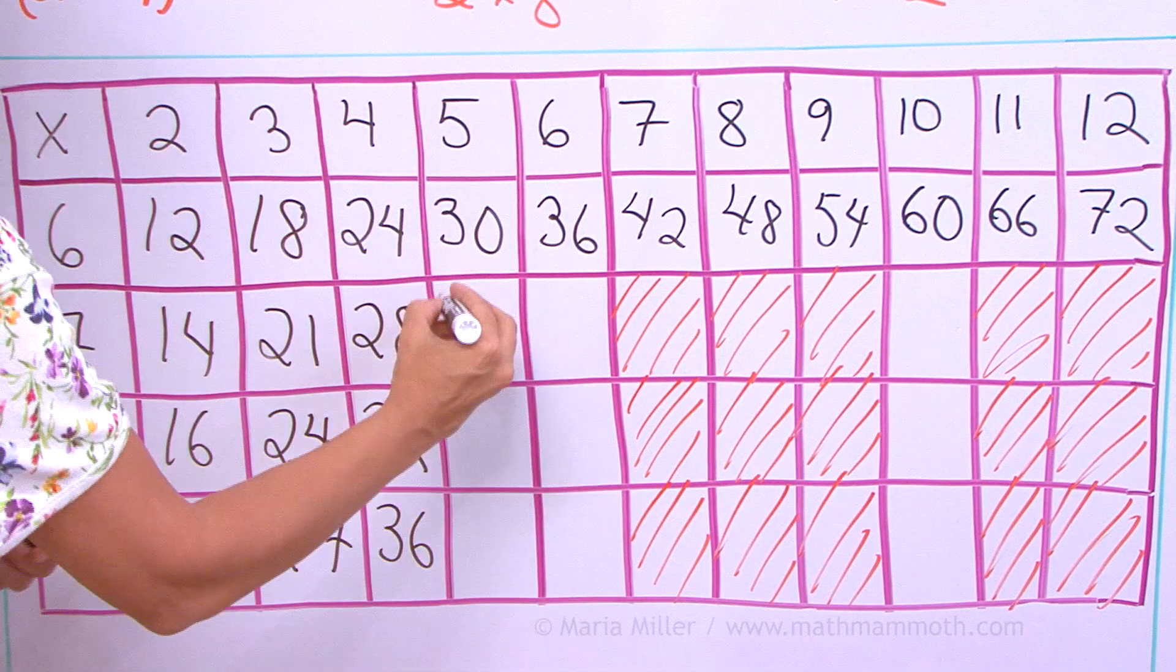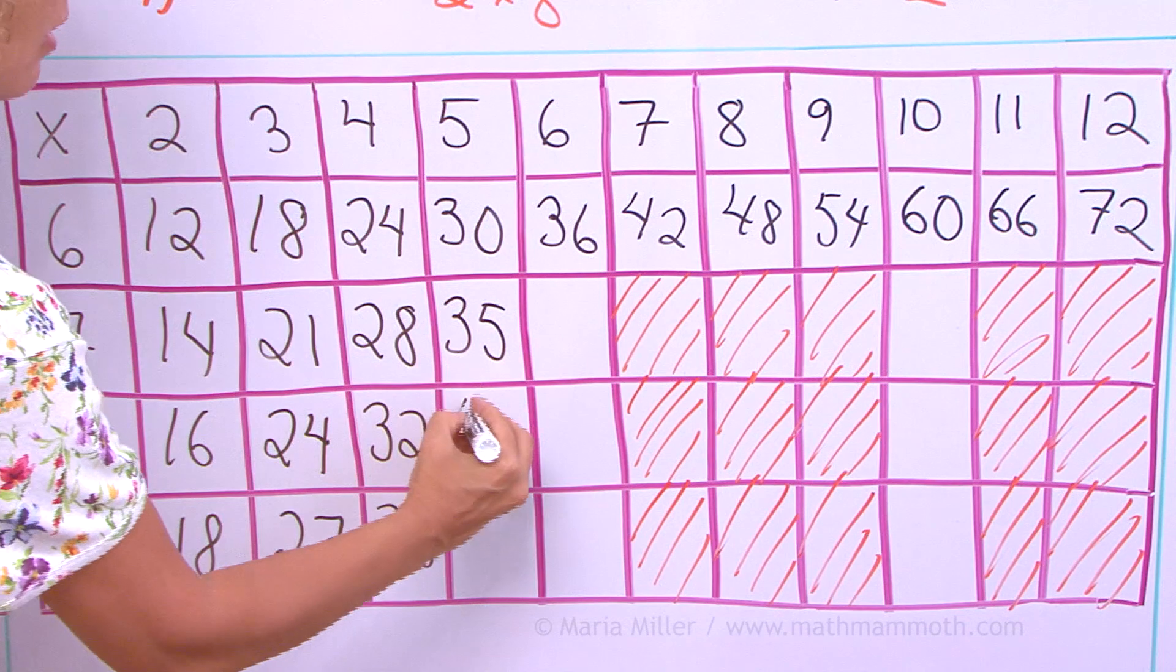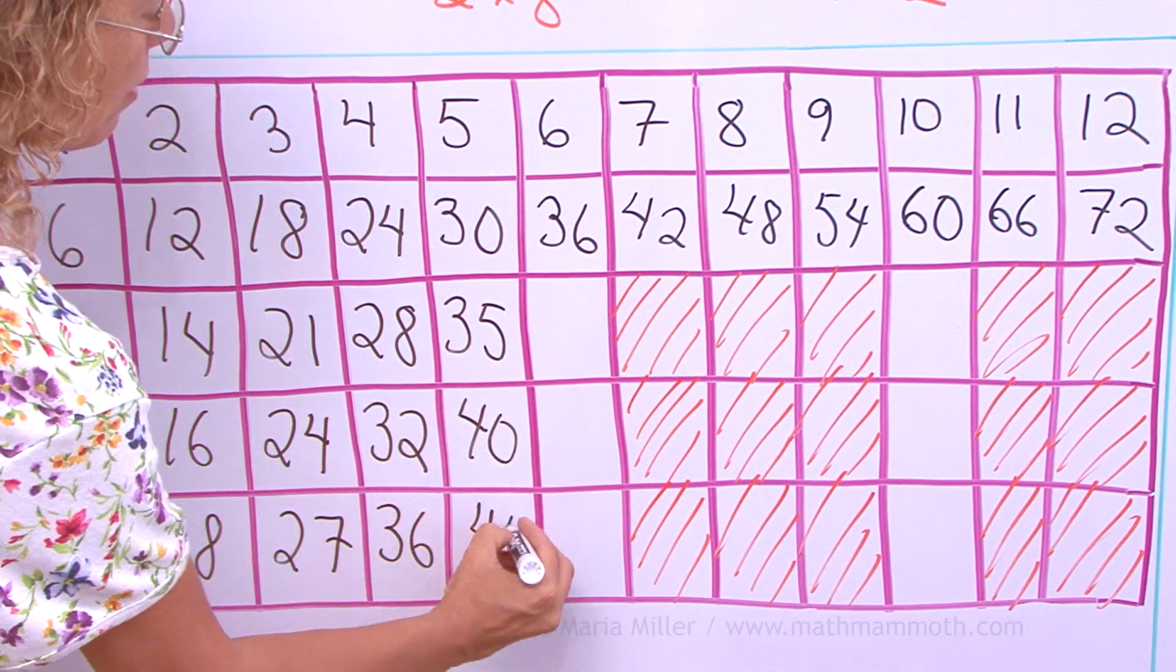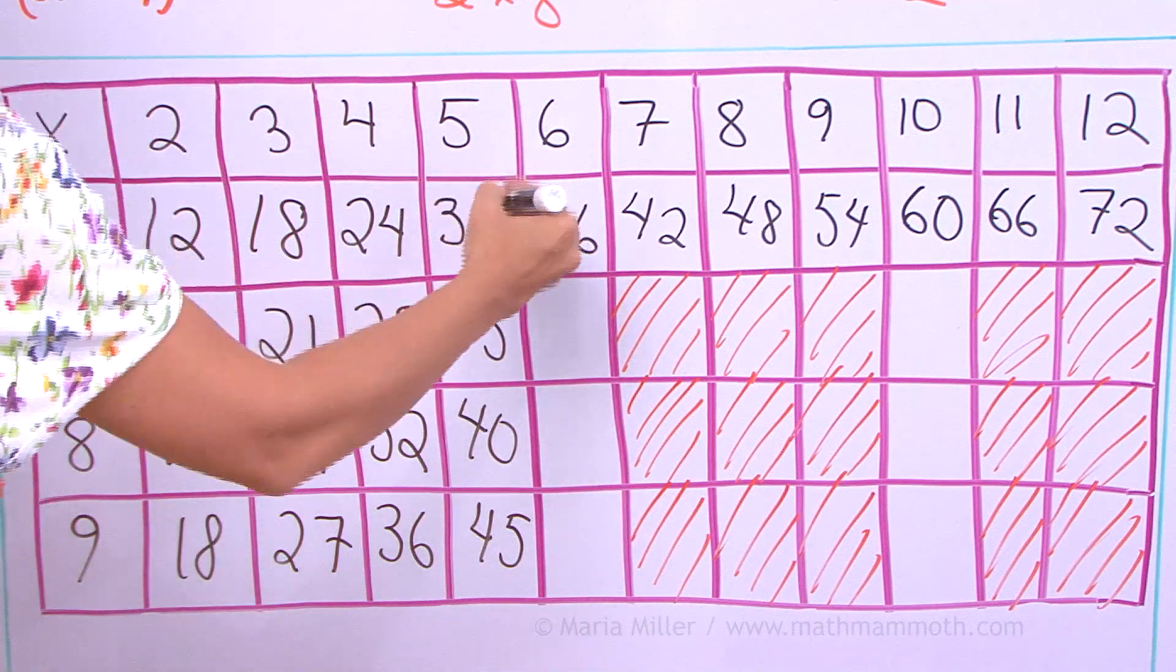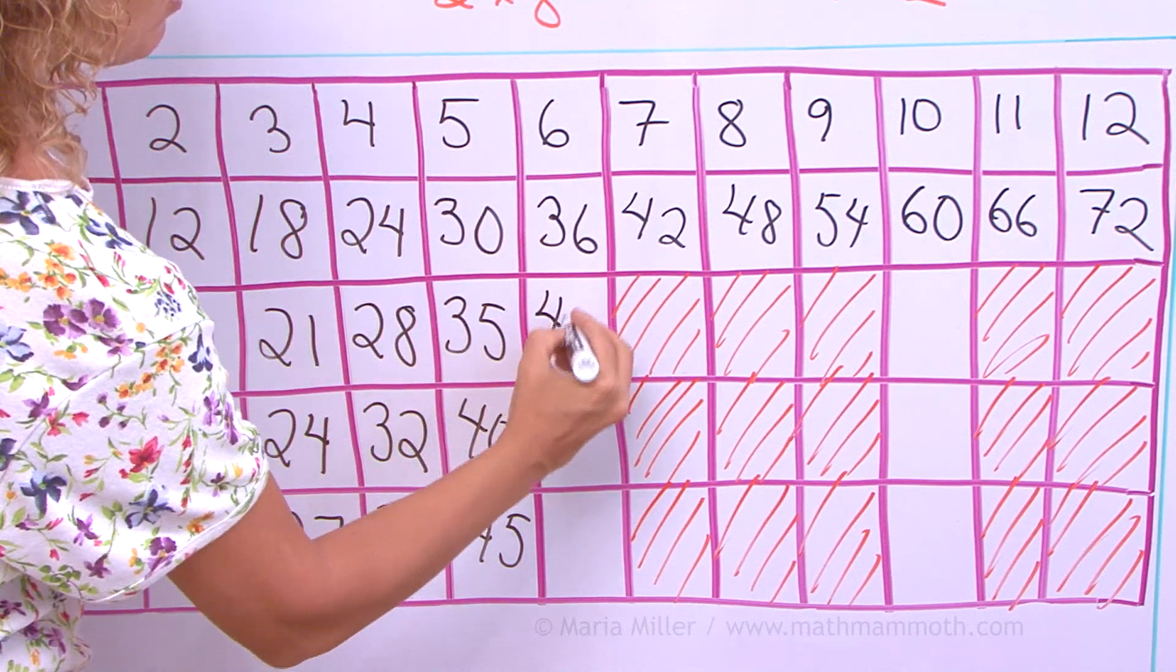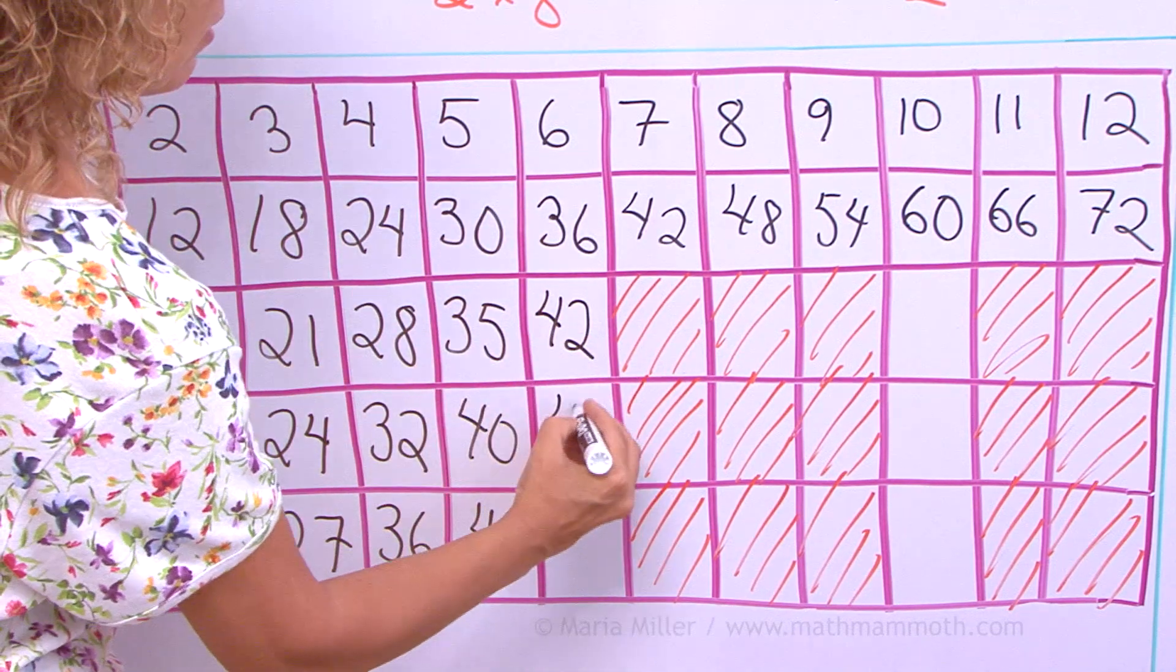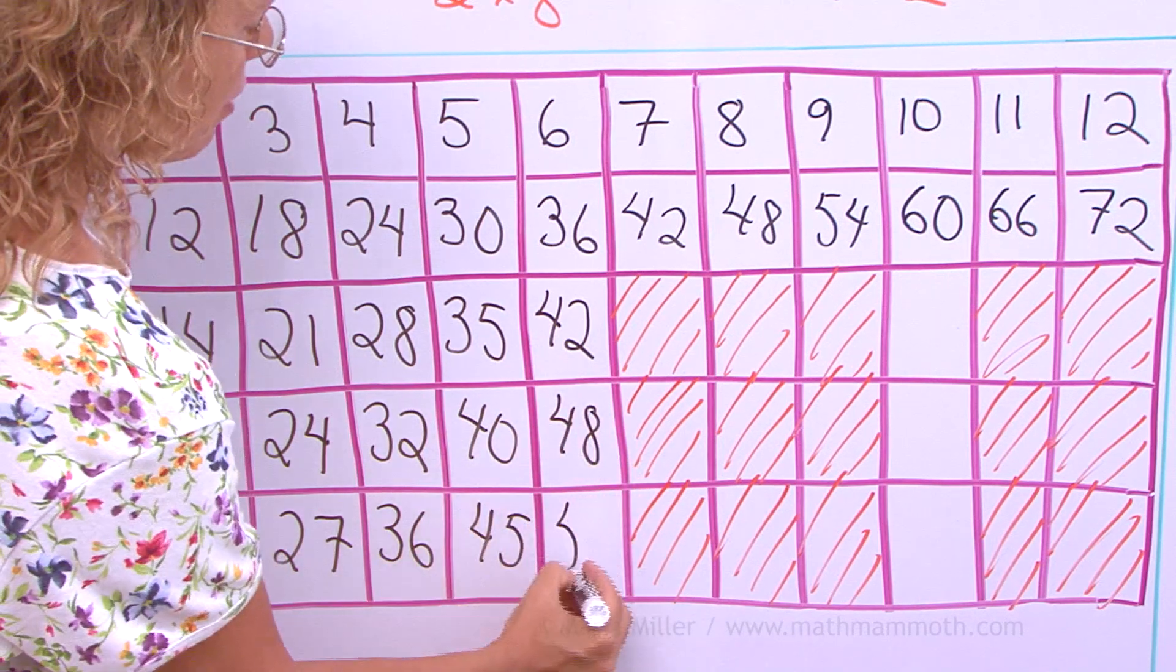Here we go by 5s. Well, that's easy. 35, 40 and 45. Then we go by 6s again. 36, 42, 48, and 54.